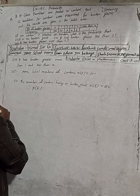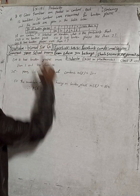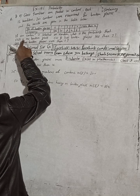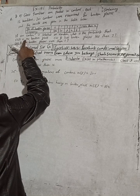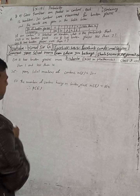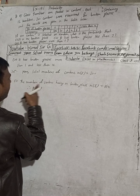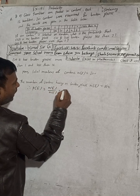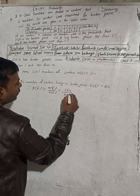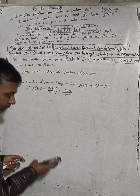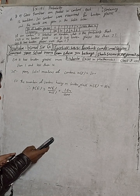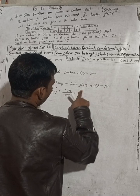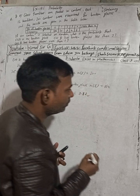Therefore, P(E) — the probability that the carton has no broken glass — equals n(E) divided by n(S), which is 164 divided by 200 = 0.82. So the answer is 0.82.